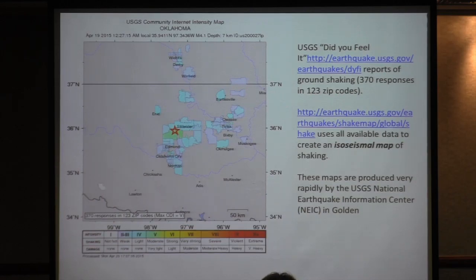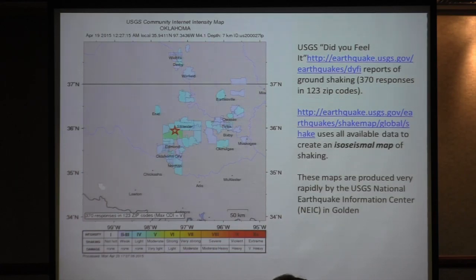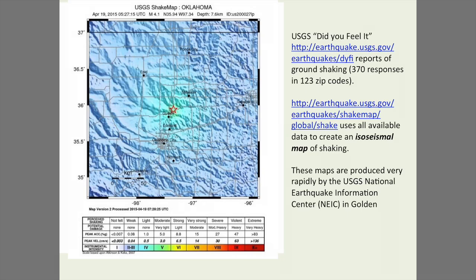Here is this magnitude 4.1 earthquake from the other day. This is a really valuable resource called 'Did You Feel It?' at the USGS — if you Google 'Did You Feel It?', the first thing you will find is this website. It's a way for people to report felt ground motion almost immediately after an earthquake by zip code, and the USGS tabulates this to produce an intensity map. The seismic intensity was around 5 near Stillwater, Oklahoma in this particular zip code. Using that and instrumental records, the USGS can produce a strong motion ShakeMap — a smooth contoured version of this — very rapidly after any significant earthquake.